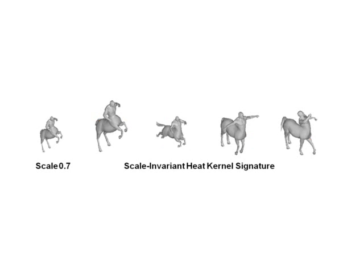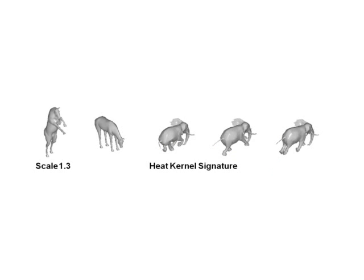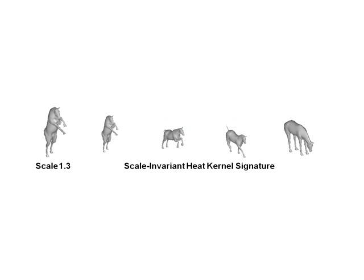On the other hand, using the R method, the matching is correct. A scaled-up horse looks similar to an elephant using heat kernel signatures, but is correctly retrieved using our approach.